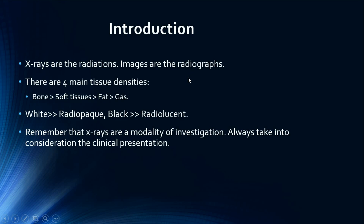The correct naming is 'abdominal radiographs,' not 'abdominal x-rays.' There are four main tissue densities: bone is the densest and looks white on radiographs, while gas is the least dense and looks black. Everything white is called radio-opaque; everything black is called radiolucent.